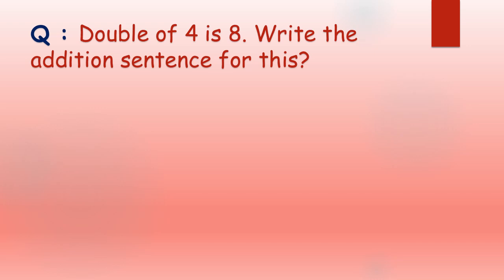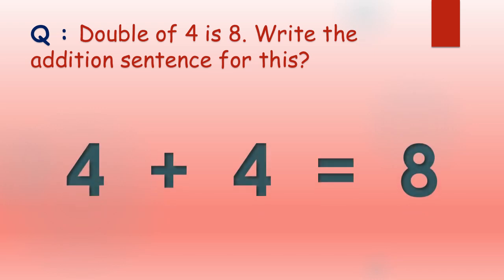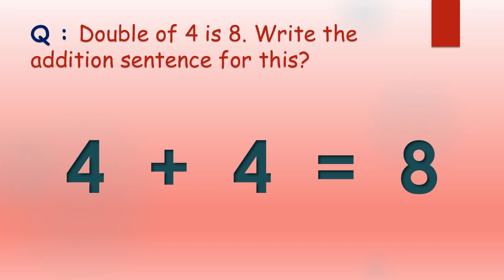See the question: double of 4 is 8 — write the addition sentence for this. The double of 4 means we should add 4 two times, so the addition sentence is 4 plus 4 equals 8. We are adding the number 4 two times, so double of 4 is 8, and 4 plus 4 equals 8 is the addition sentence.